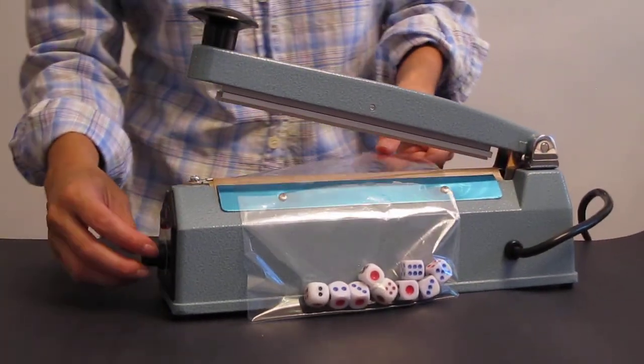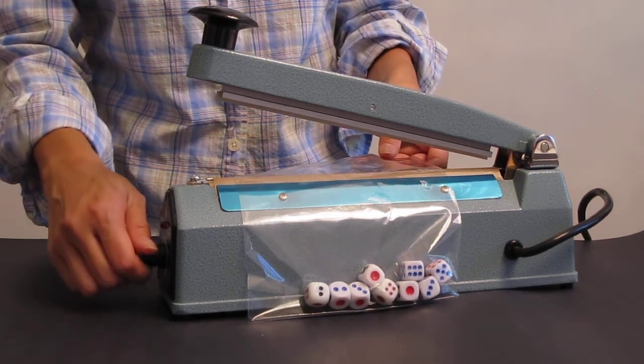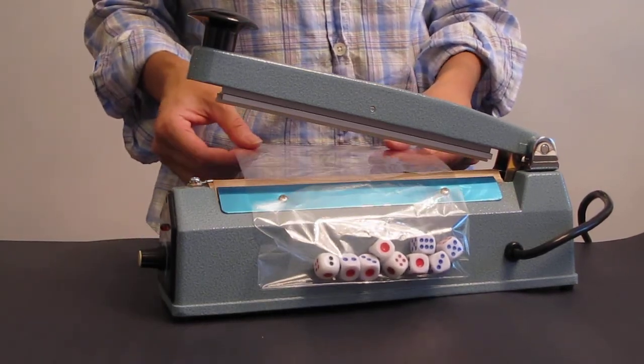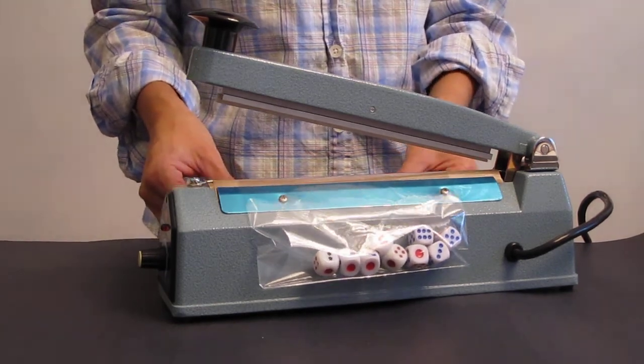Now for a seal and cut application, adjust your timer to the lowest setting that will still seal and cut. Seal and cut produces no seam on your poly bag.